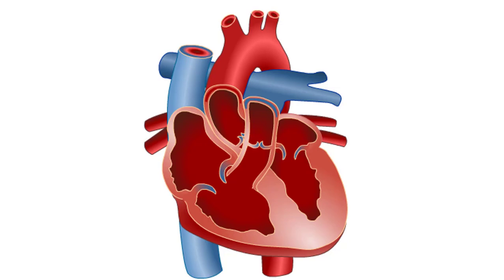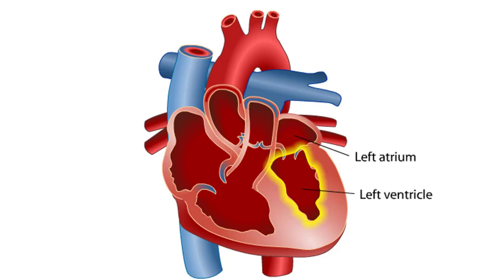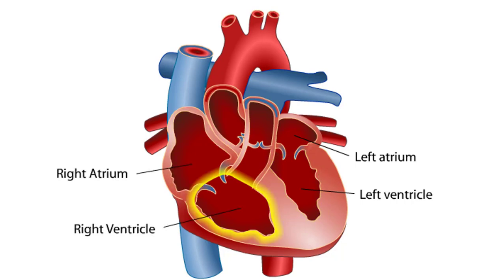The heart is the pump of the human circulatory system. The left side of the heart has two connected chambers, the left atrium and the left ventricle. The right side of the heart also has two connected chambers, the right atrium and the right ventricle. These two sides, or pumps, of the heart are not directly connected with one another.